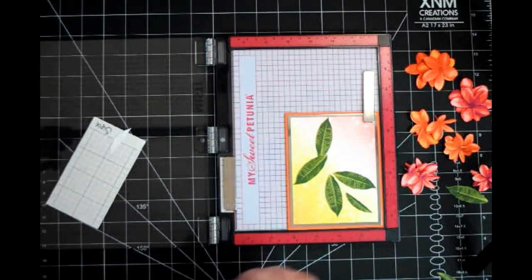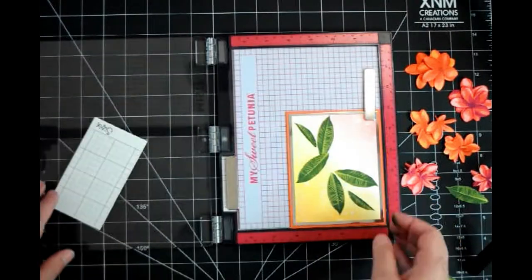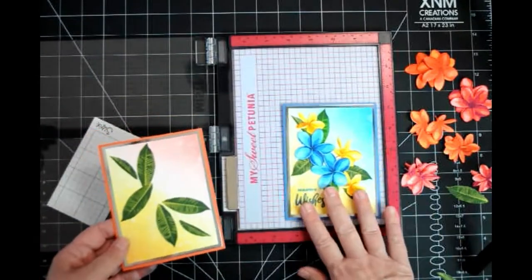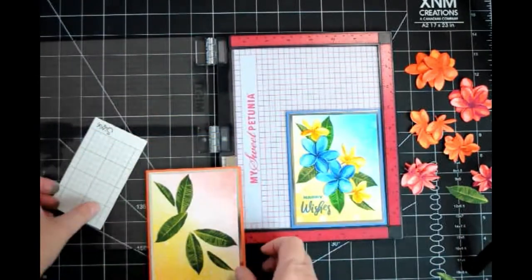Now that all the leaves are attached to the duplicate card, it is time to work on the middle layer of flowers.